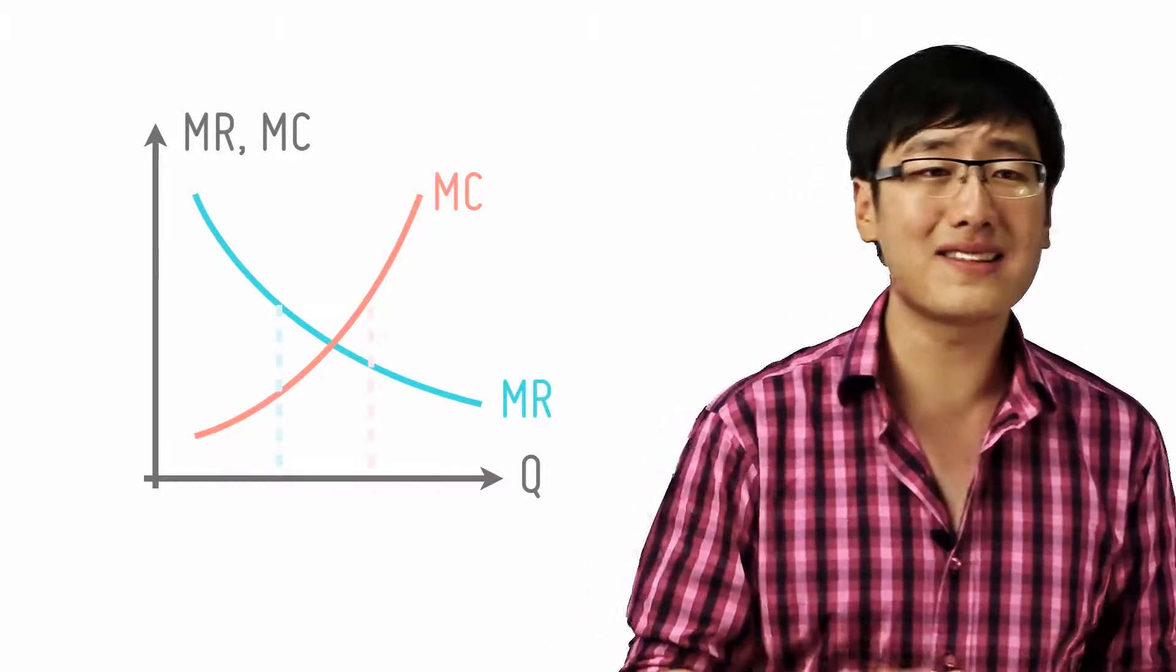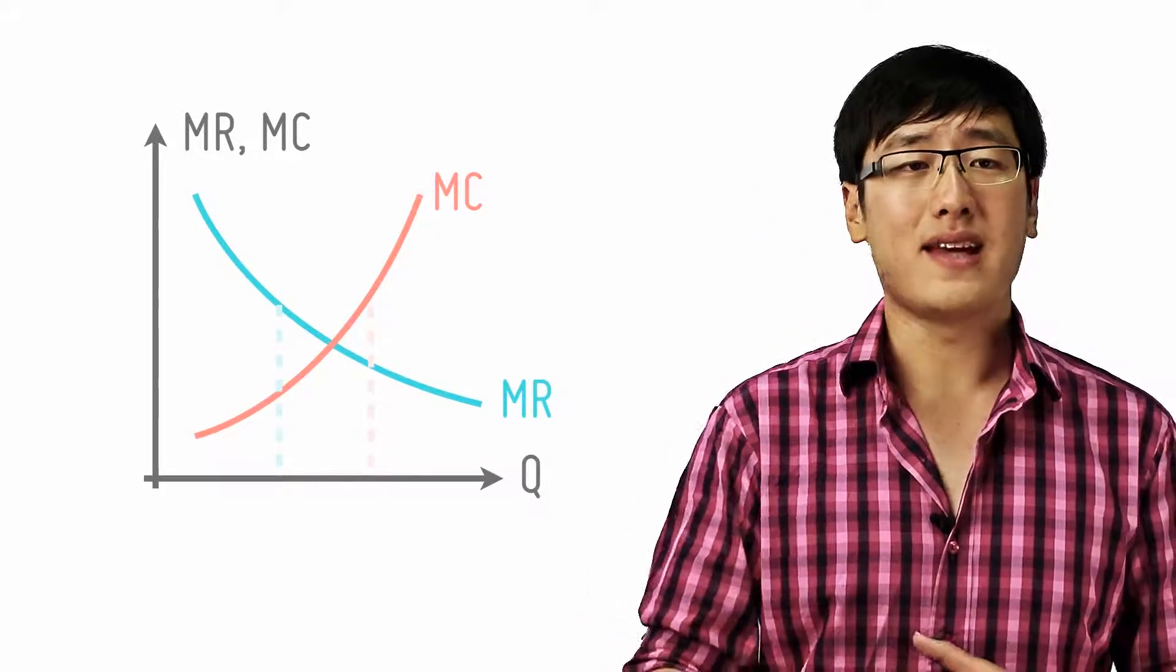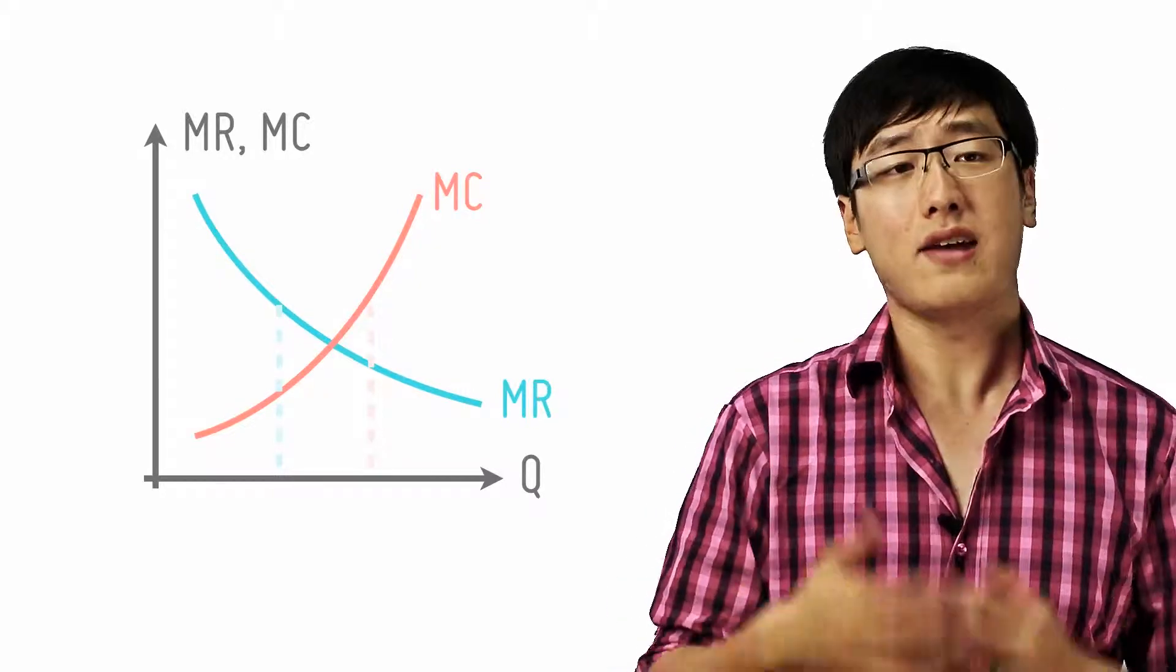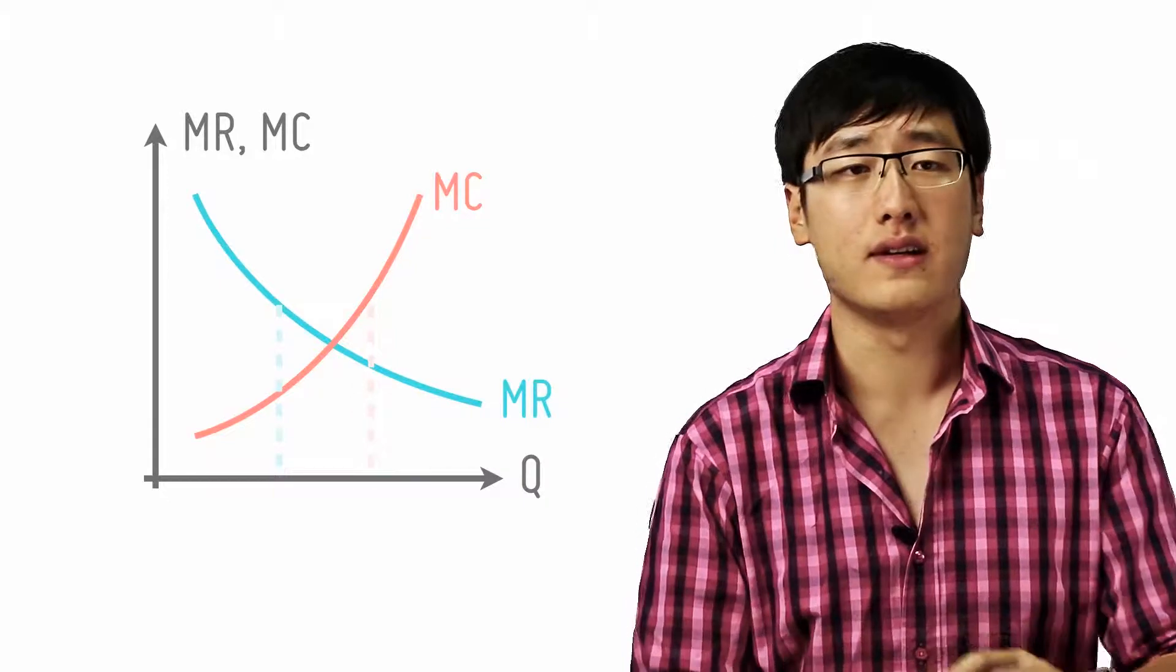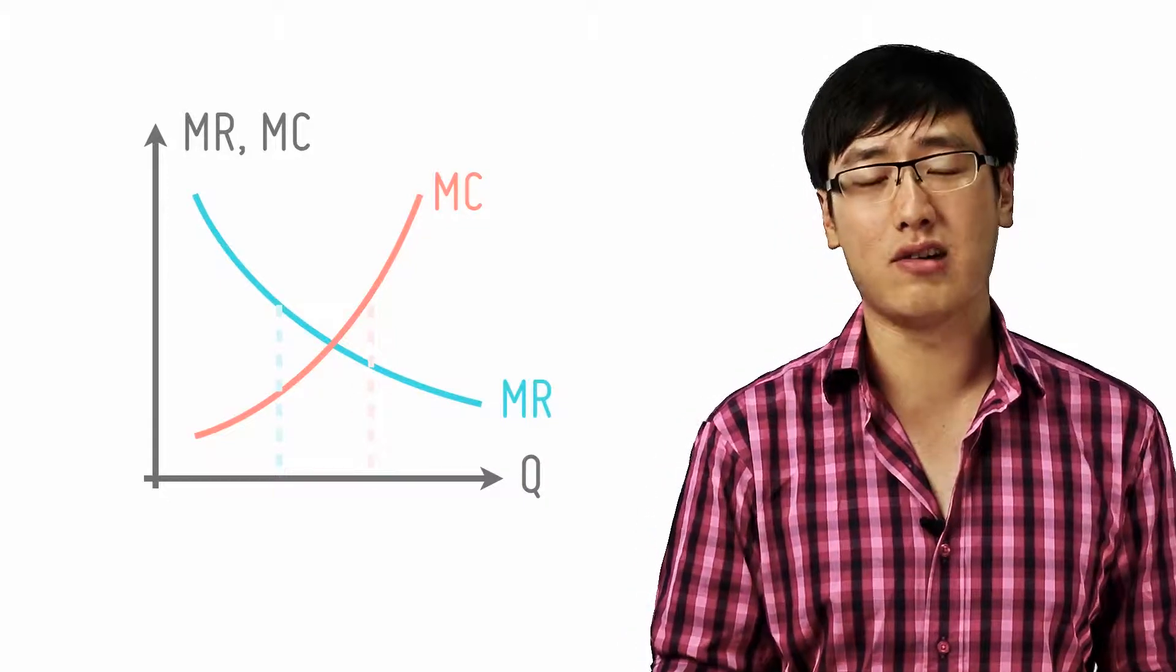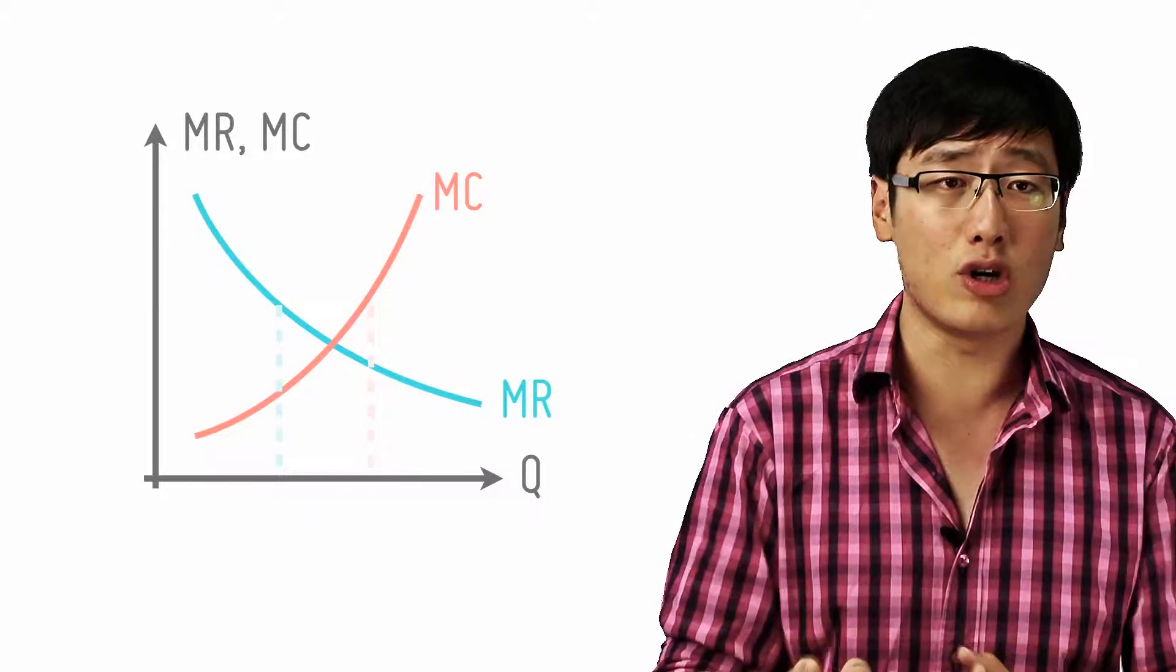If MR is less than MC, however, that means at that unit, that unit fetches in less revenue than what it takes to produce it. So actually, it's making a loss by producing that unit, so the firm shouldn't actually produce that unit.